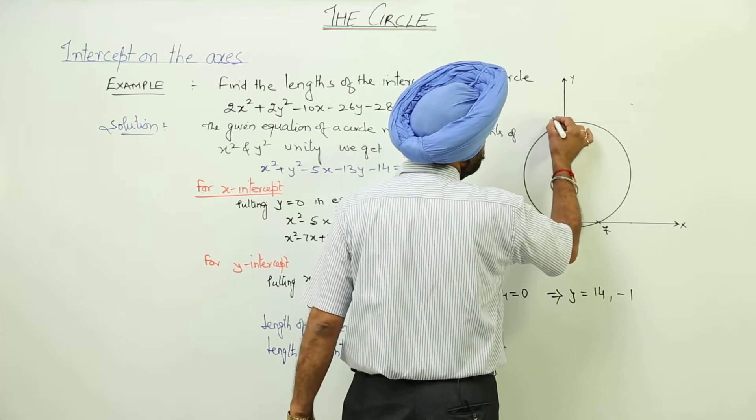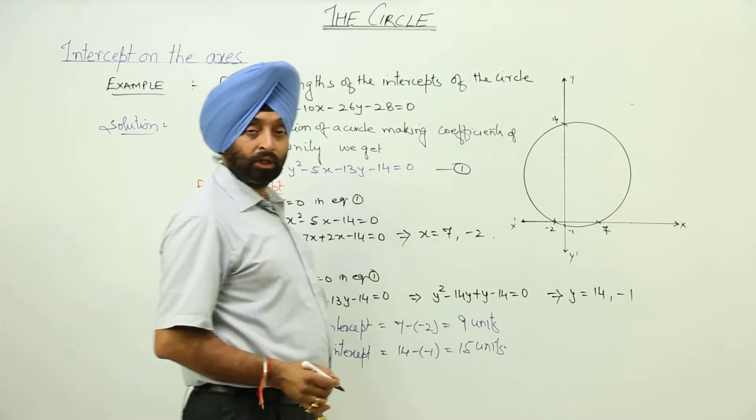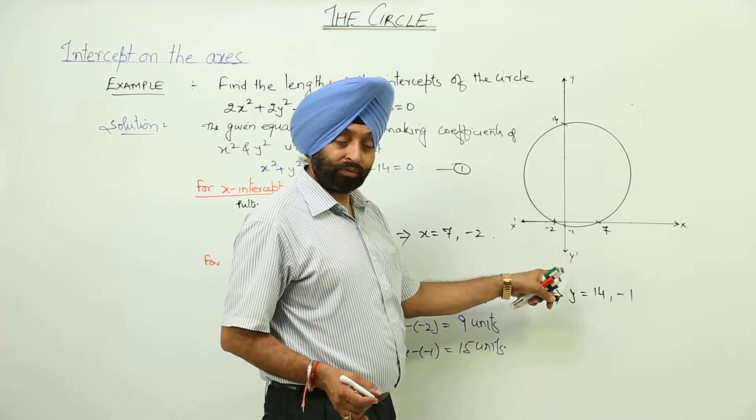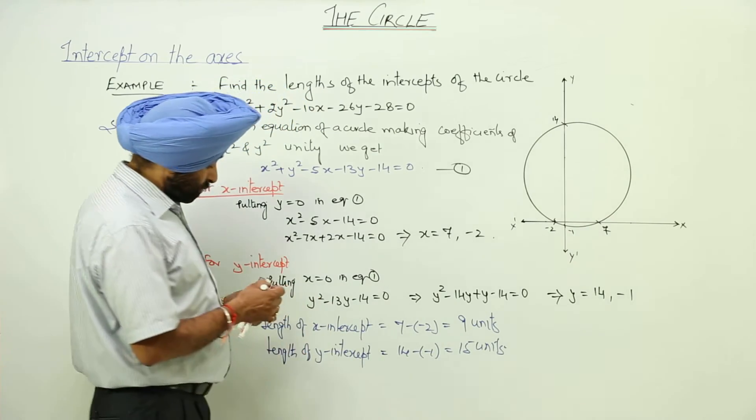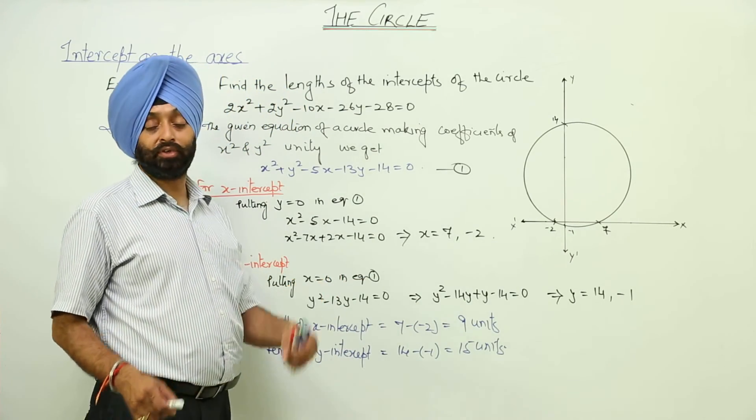Similarly, for y axis, let this be 14 and this point be negative of 1. So 14 towards the positive side, 1 towards the negative side. So 14 plus 1 it becomes 15 units. So length of the x intercepts 9 units and length of the y intercept 15 units.